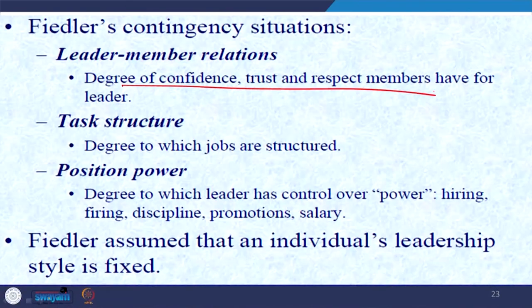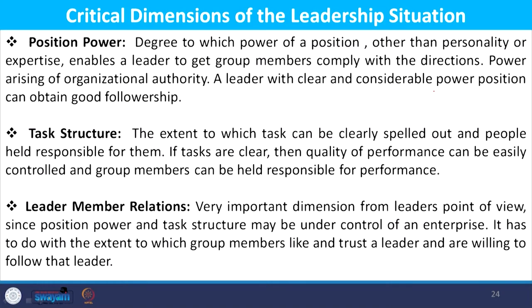Fiedler assumed that an individual's leadership style is fixed, and critical dimensions of the leadership situation depend on position power, task structure, and leader-member relations. Position power is the degree to which the power of a position — other than personality or expertise — enables a leader to get group members to comply with directions. Power arising from organizational authority means a leader can give clear instructions, exercise influence over subordinates, and a leader with considerable position power can obtain good followership.